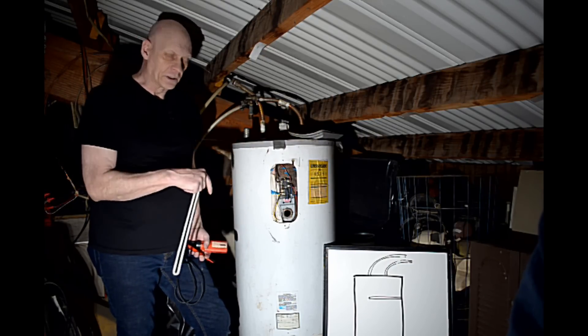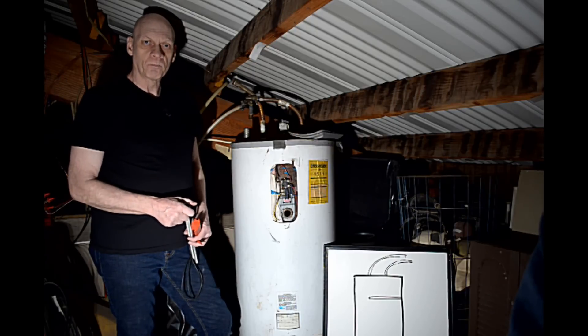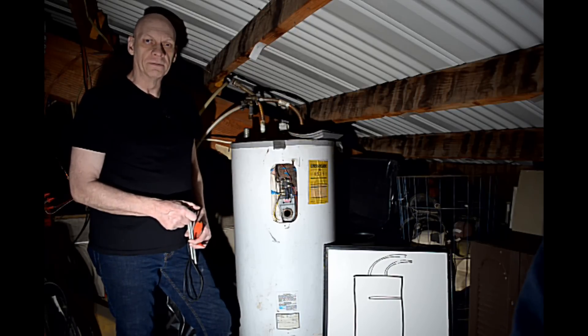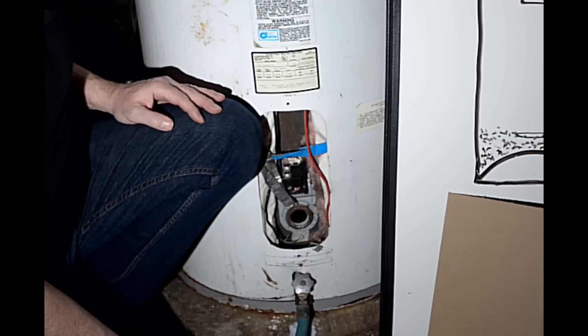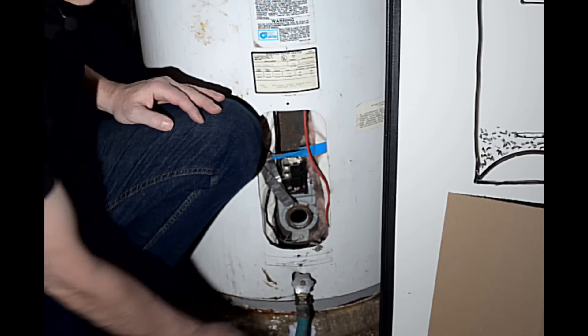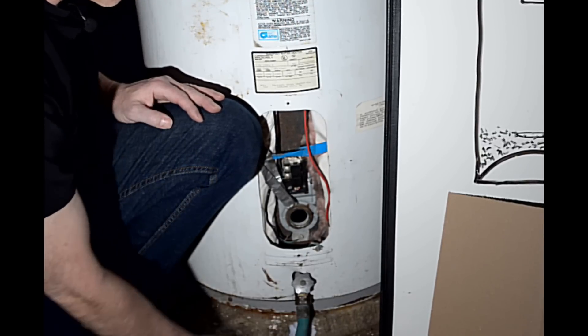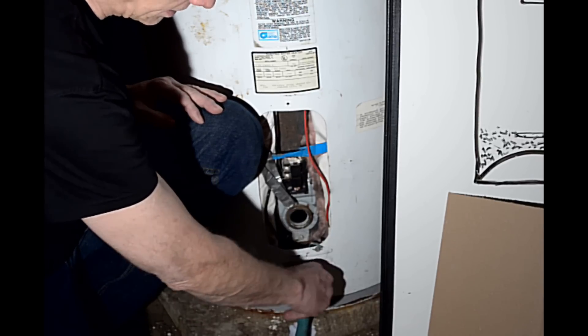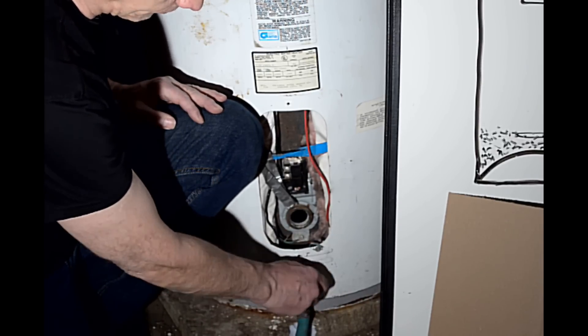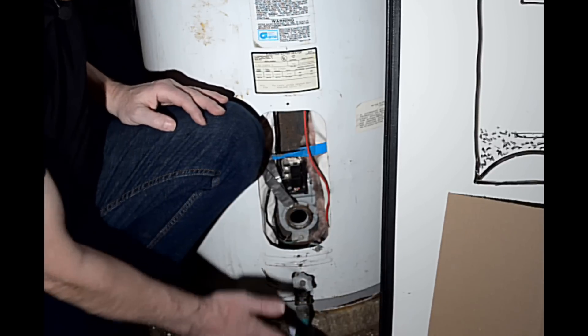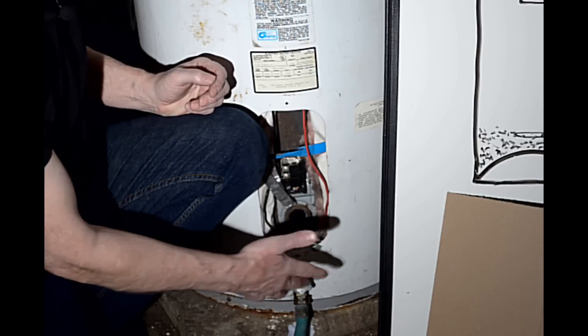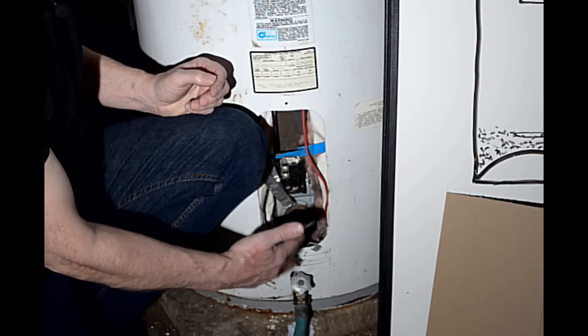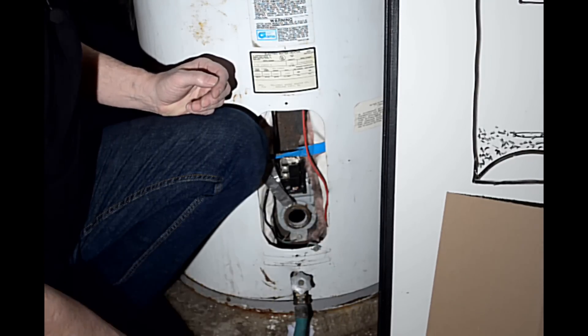Second thing we're going to do, hook a hose to the drain valve. When you get your hose hooked up to the drain valve, go ahead and turn your valve on. And it may not start to drain because there's no air coming in to allow the water to escape.